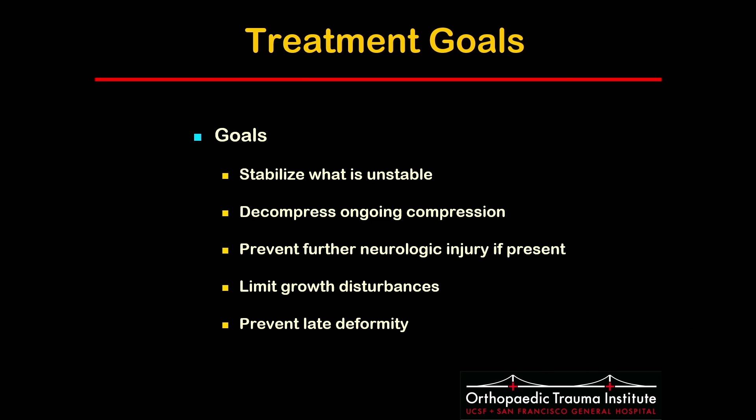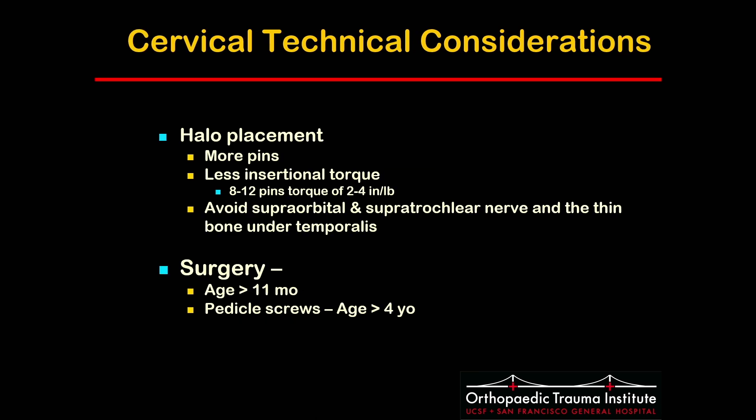Coming back to our treatment goals: stabilize what is unstable, decompress ongoing compression, prevent further neurologic injury, limit growth disturbances, and prevent late deformity. In placing a halo, kids have a softer skull and therefore require more pins inserted with less torque. Care is needed to avoid the supraorbital and supratrochlear nerves as well as the thin bone under the temporalis muscle.